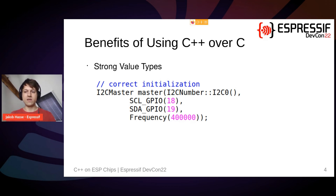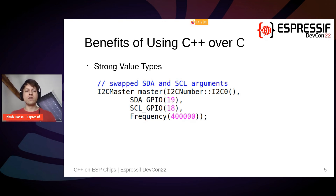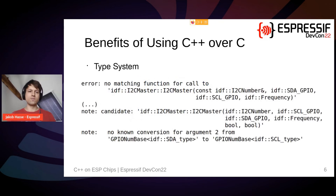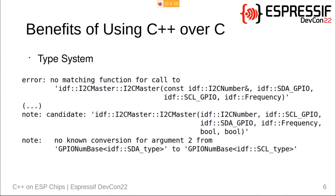But this usage is not the main advantage. It's much more useful in a case like this: if we accidentally swap the SDAGpio and SCLGpio, trying to compile this will produce a compiler error. It will say no matching function for the call, with a guess at what we want to call, and then directly tell us there is no known conversion for argument 2 — that we are passing an SCAGpio where an SCLGpio is expected. Note this is a compile error, so you correct the mistake immediately. If you had used normal types like int or uint, there would have been no error, and you would only notice the mistake much later when actually trying to access the I2C bus.